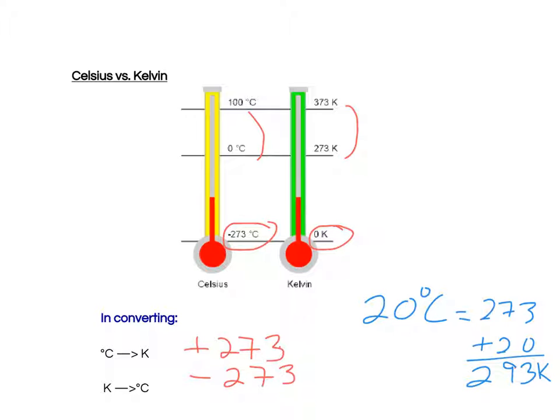Now, the Kelvin scale is really good because, like we said, there are no negatives in it, which makes some of our formulas work a little bit better.